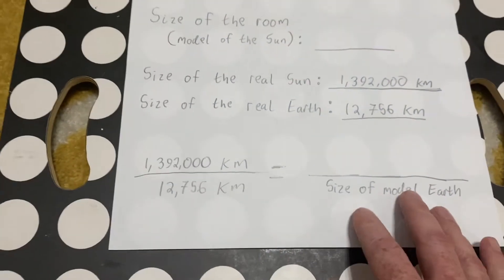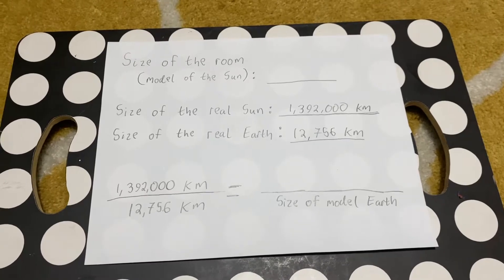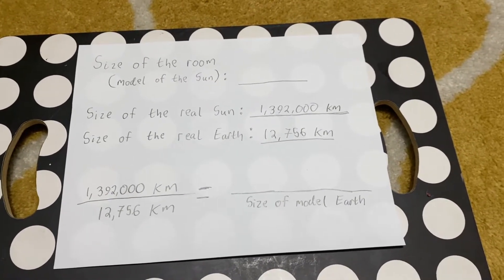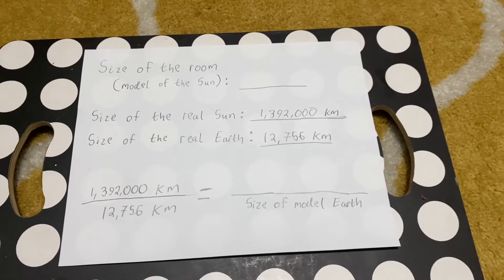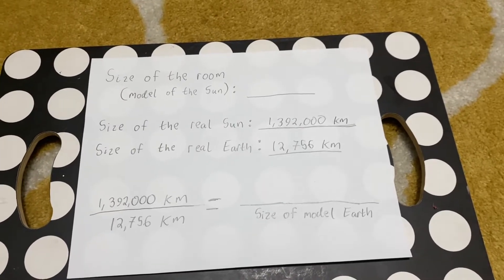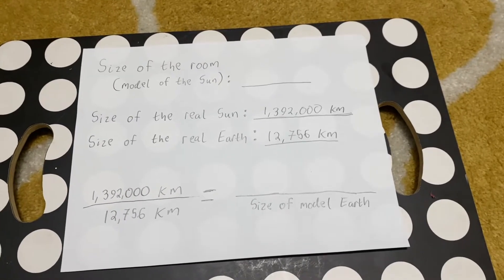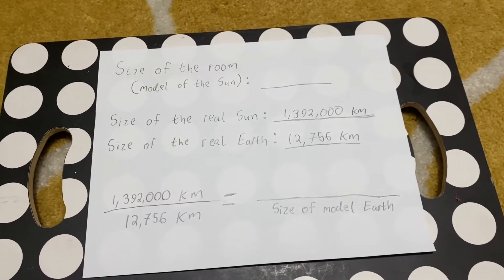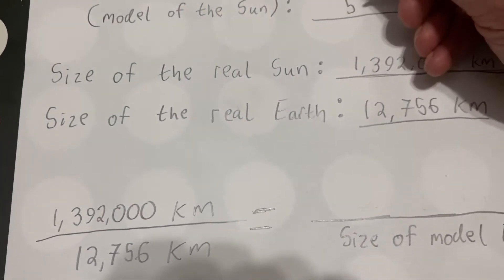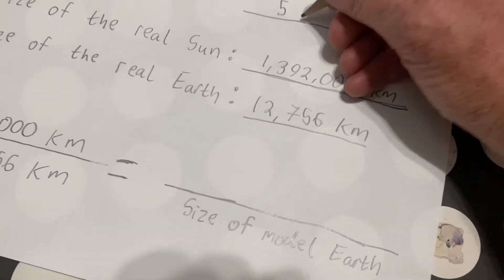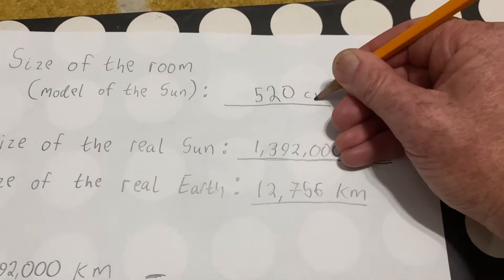I have a piece of paper here ready. In the second part of this video, I'll show more detailed calculations on the computer, as well as going through each of the questions in the analysis part of the lab, including how to overlay circles on a Google satellite image. For now, let's just do an estimate to get an idea about what we're doing. We just got the size of the room — that represents the sun — so we'll write 520 centimeters.